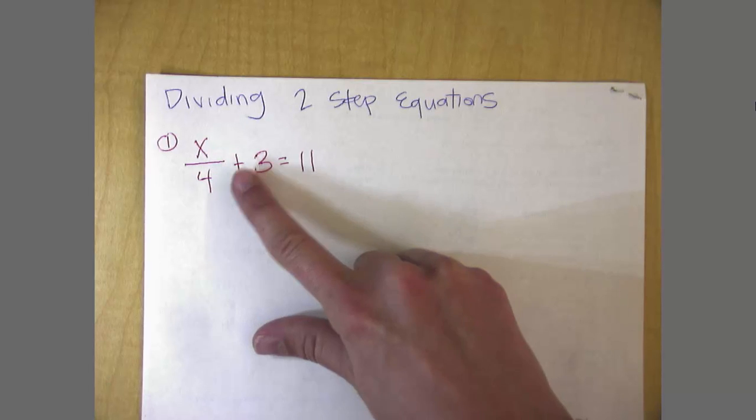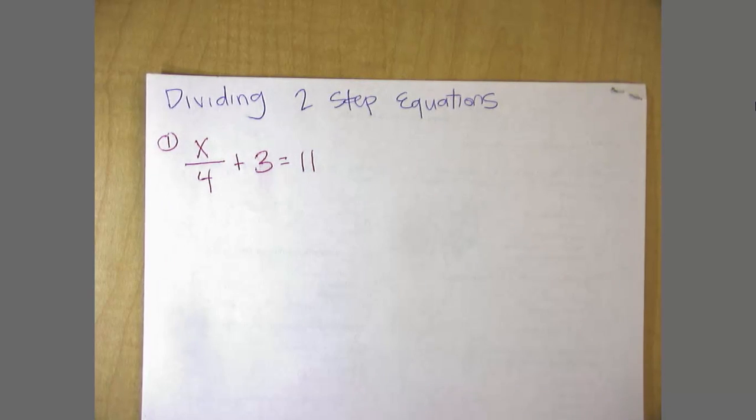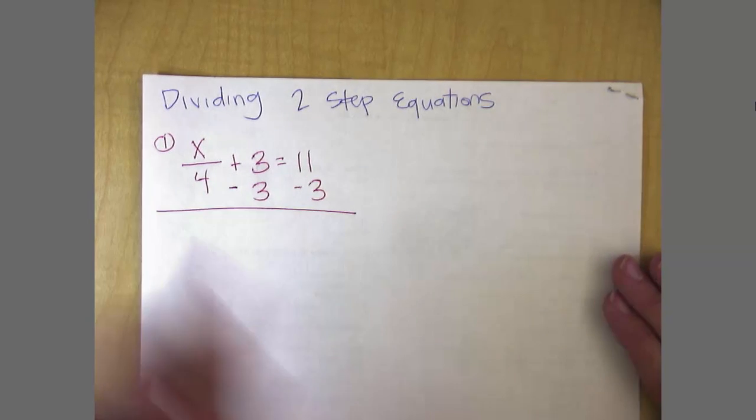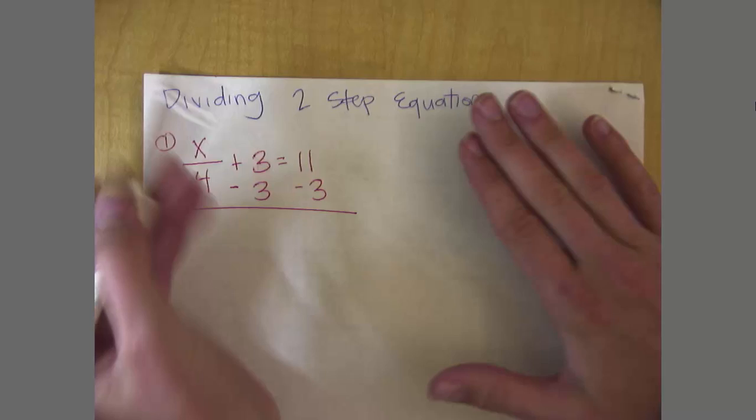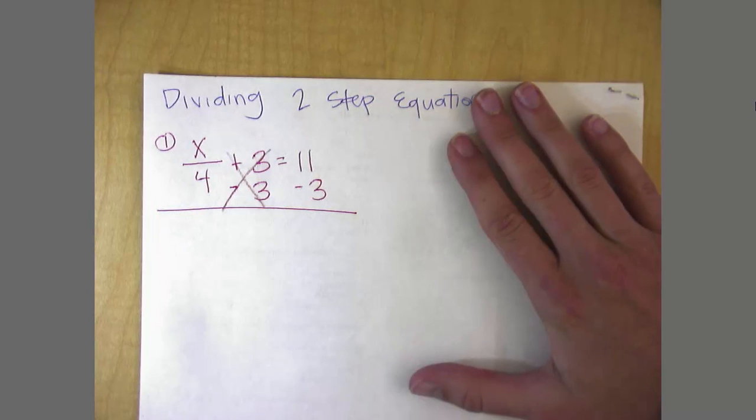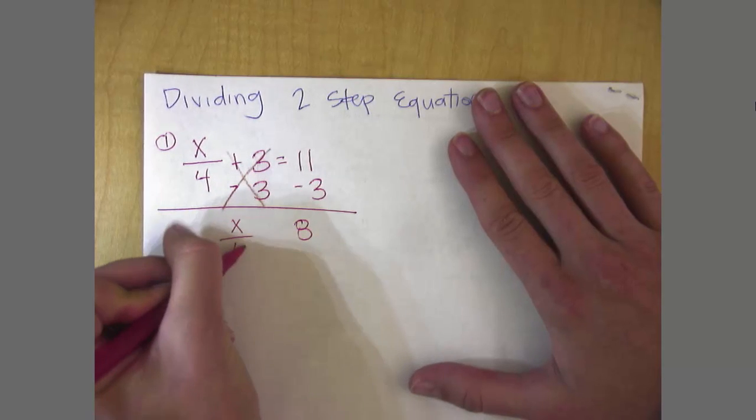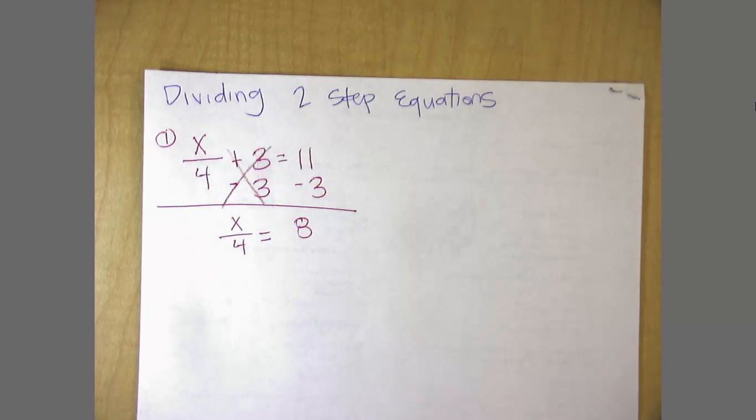How can I get rid of a plus 3? Minus 3 on the left and on the right. My 3's will cancel out, and I'm left with, don't forget this is x divided by 4 is equal to 8. My answer is not x is equal to 8. My answer is x divided by 4 is equal to 8.